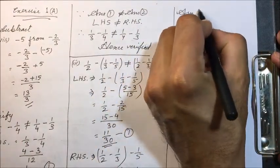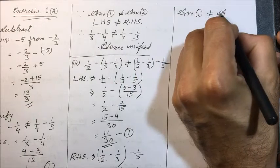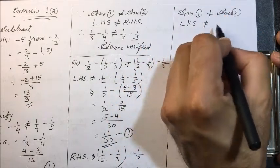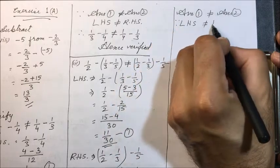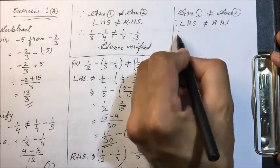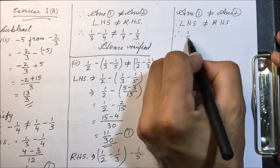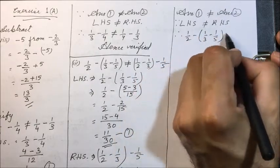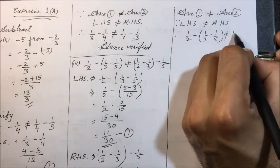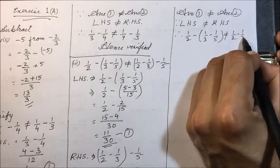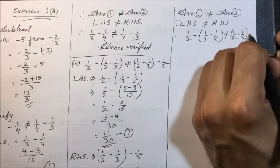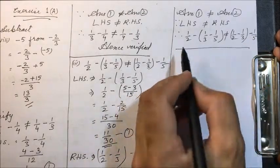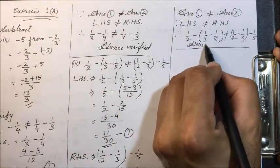Since LHS is not equal to RHS, therefore 1/2 minus (1/3 minus 1/5) is not equal to (1/2 minus 1/3) minus 1/5. Hence verified — subtraction is not associative.